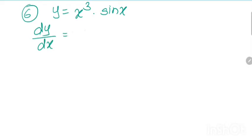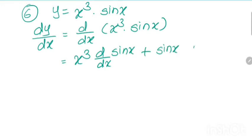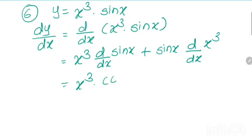We apply the formula: d by dx of x cube into sin x. So x cube times derivative of sin x, which is cos x, plus sin x times derivative of x cube, which is 3x square. The answer is x cube cos x plus 3x square sin x.